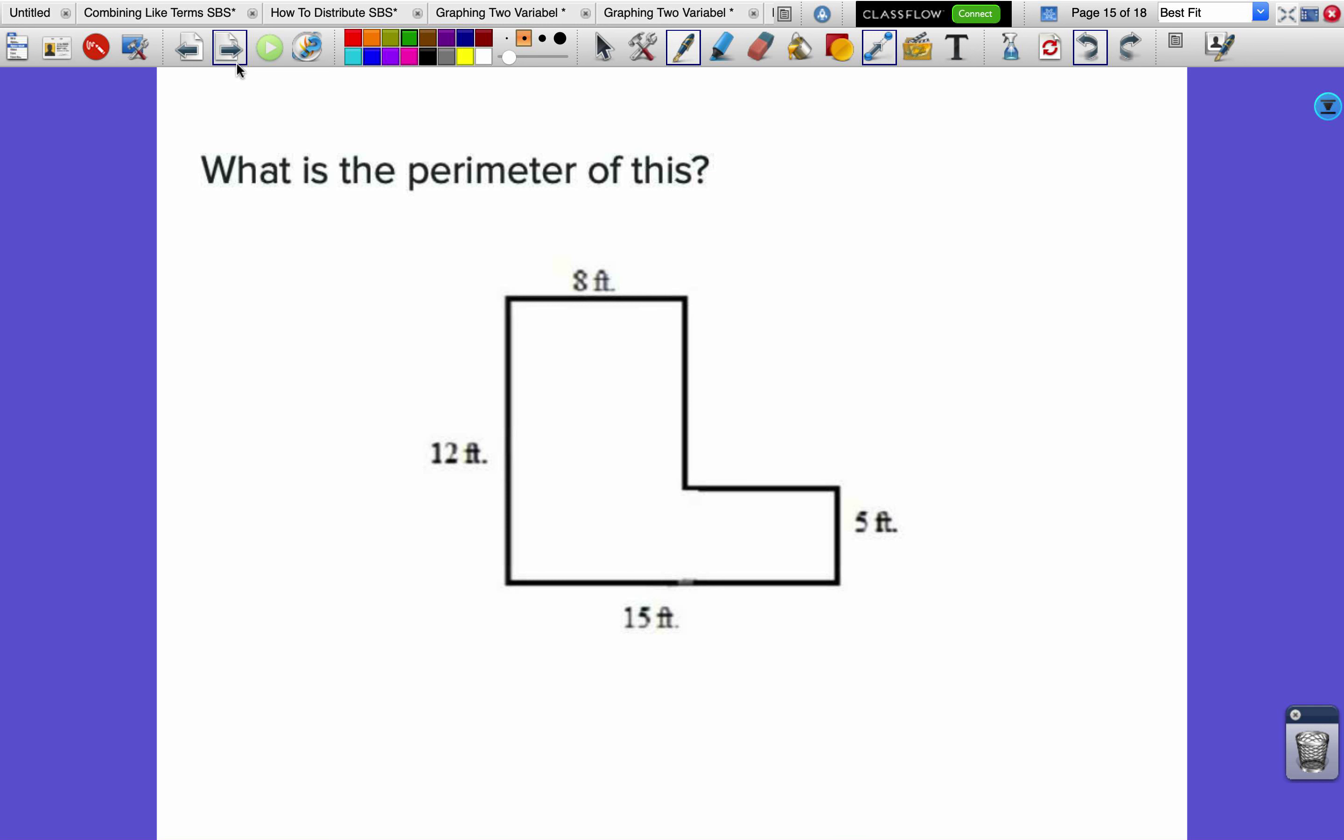Now this is what I call an L-shape or a composite shape. We've got to find the perimeter of this. Notice two sides are missing, so the big thing is we need to figure out these two side lengths. Pause the video now and sketch this shape.